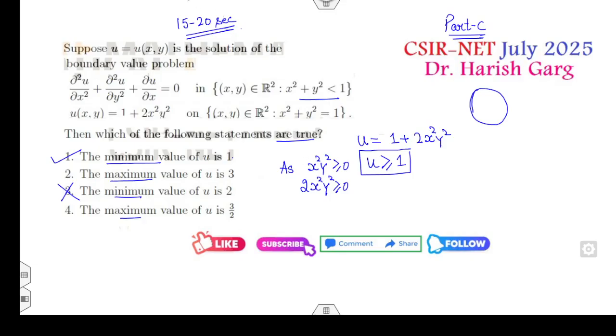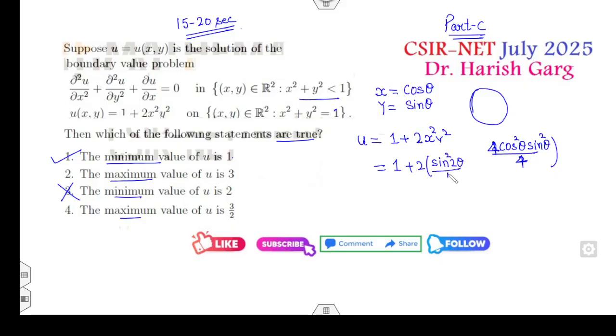Now because it is a circle, a unit circle, can you write the polar coordinates of the circle of radius 1: x is cos θ, y is equal to sin θ. Is it okay? Any doubt up to here? So that means I can write u is 1 plus 2cos²θ sin²θ. I can multiply 2 and divide it by 2, or instead of 2 it's 4 divided by 4 multiplied by 4. The numerator becomes sin²(2θ) divided by 4.